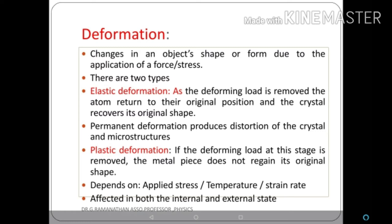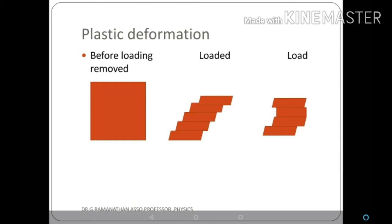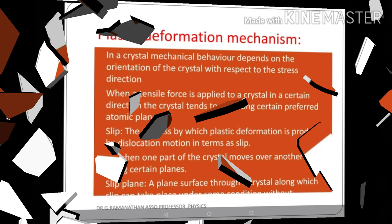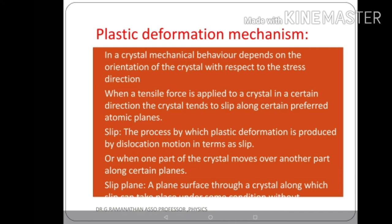Plastic deformation mechanism plays a main important role in mechanical properties. It depends upon the orientation of the crystal with respect to the stress direction. When a tensile force is applied to a crystal, the crystal tends to slip along certain preferred atomic planes. The process by which plastic deformation is produced by dislocation motion — where one part of the crystal moves relative to another part along a certain plane — is called slip. A slip plane is a plane through a crystal along which slip can take place without appropriately disturbing the crystal.